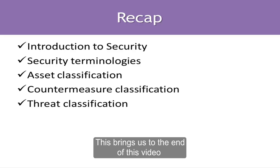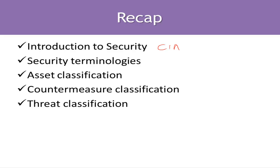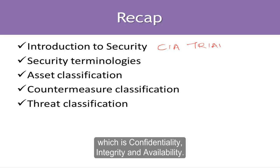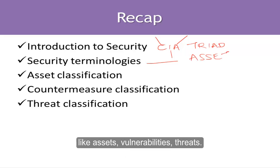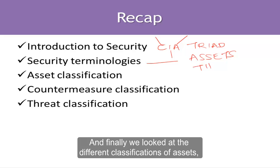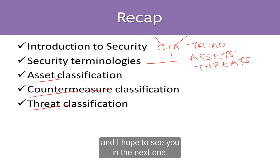This brings us to the end of this video, where we covered an introduction to security including the CIA triad — confidentiality, integrity, and availability — as well as security terminologies like assets, vulnerabilities, and threats. Finally, we looked at the different classifications of assets, countermeasures, and threats. I hope this video has been informative and I hope to see you in the next one. Thank you.